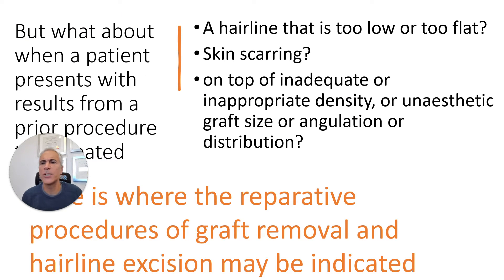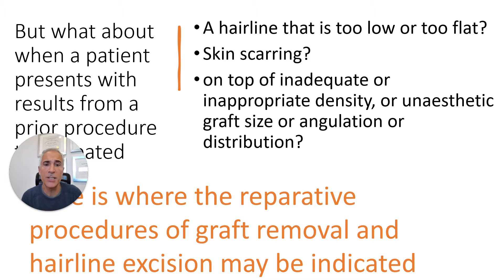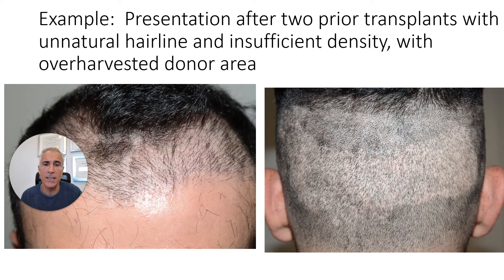But what about when a patient presents with results from a prior procedure that has, for example, a hairline that is too low or too flat, scarring in the area of the transplant, or inadequate and/or inappropriate density, unesthetic graft size, angulation, or distribution? This is where the reparative procedures of graft removal and hairline excision may be indicated.